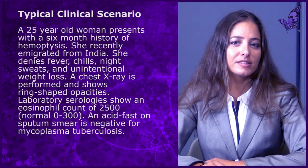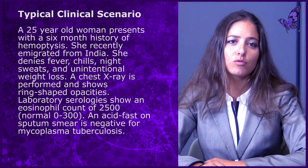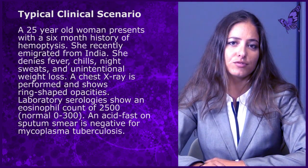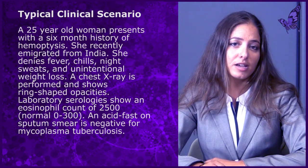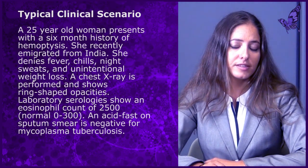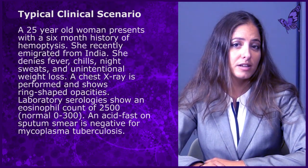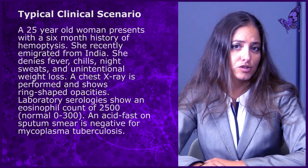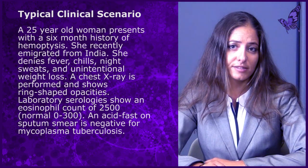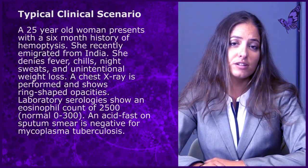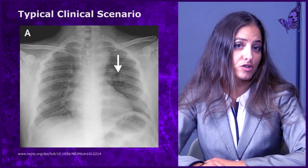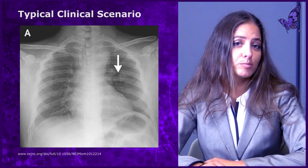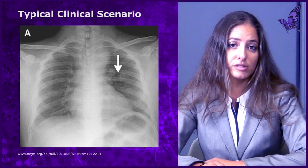Let us discuss a typical clinical scenario of lung flukes. A 25-year-old woman presents with a six-month history of hemoptysis. She recently emigrated from India. She denies fevers, chills, night sweats, and unintentional weight loss. A chest X-ray shows ring-shaped opacities. Laboratory serologies show an eosinophil count of 2500, with normal being 0 to 300. An acid-fast sputum smear is negative for Mycobacterium tuberculosis.